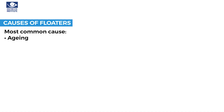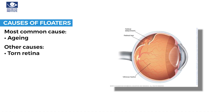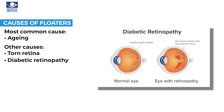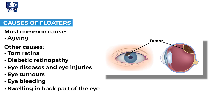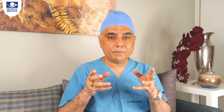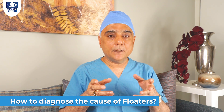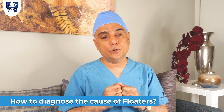You may see them as specks, strings, strands, blobs, or any other shape depending on the clumping of the protein fibers. Besides aging, other causes of floaters include a torn retina, diabetic retinopathy, some eye diseases, eye injury, eye tumors, bleeding in the eye, swelling in the back part of the eye, and a condition called near-sightedness or myopia.